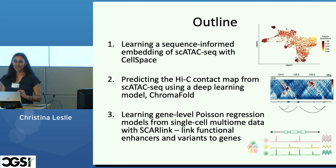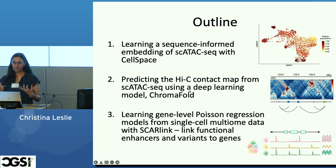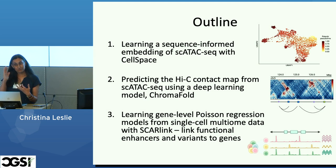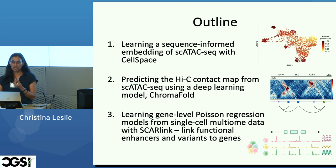So what I'm going to talk about today is three methods, all motivated by analyzing single-cell ATAC properly and learning about gene regulation — including what enhancers are regulating what genes. First, a sequence-informed embedding algorithm for single-cell ATAC called CellSpace. Then a new method for predicting the Hi-C contact map from single-cell ATAC alone. And finally, a simple machine learning method for using multi-omic single-cell data — where you have both ATAC and RNA readouts from the same cells — to learn single-cell regression models that link enhancers to genes and interpret disease-associated genetic variants in a cell-type-specific fashion.